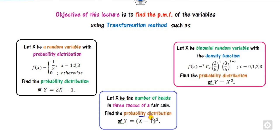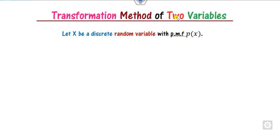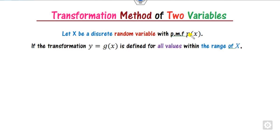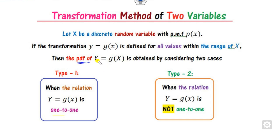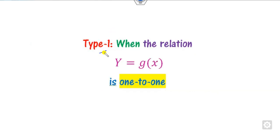We will also see how you can find the probability density function of y when it is of some given form, or any general function form. For whenever such a problem occurs, we will think about the transformation method. Let x be the discrete random variable having the probability mass function p(x). Our target is to find the transformation y = f(x), defined over all the range of x. There are two cases in which you can define the PDF of y: the first case is when the function is 1-to-1, and the second is when it is not 1-to-1.